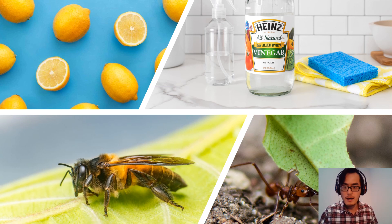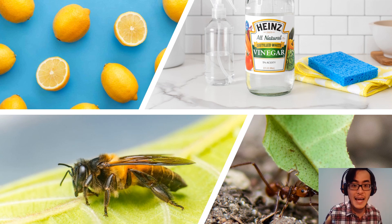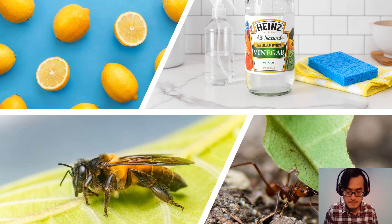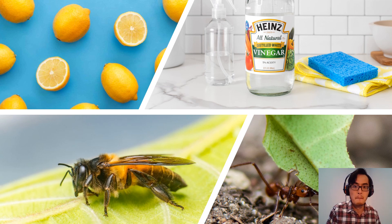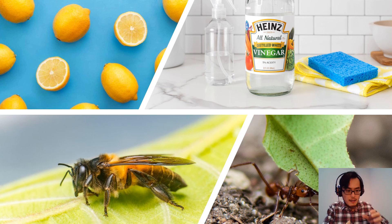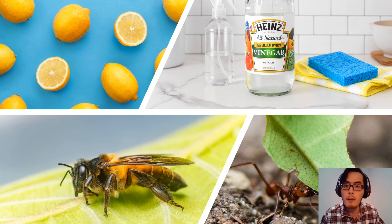We have vinegar, which contains ethanoic acid — there's another name for it, which is acetic acid. The bottom left and bottom right organisms actually produce what we call formic acid. Formic acid is also known as methanoic acid. So all of these compounds are part of the same homologous series, which is carboxylic acid.